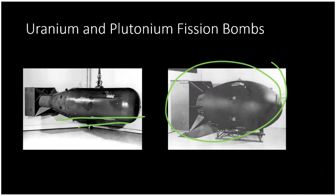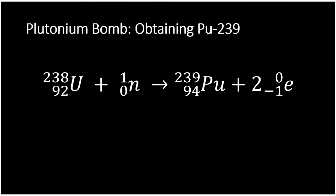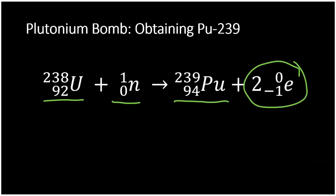Now for the plutonium bomb. Obtaining plutonium is actually the easy part. All you have to do is take uranium-238, combine it with a neutron, and you get plutonium-239. There are also two beta particles released through beta decay and some intermediates involved, but the main point is: hit U-238 with neutrons and you get plutonium out. Since uranium-238 is easy to find, you just need a neutron source and you can make as much plutonium as you want. So producing the fuel is the easy part.